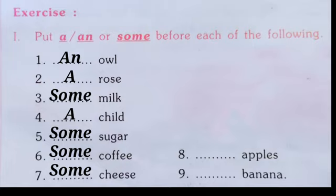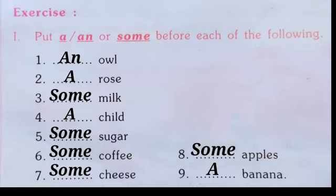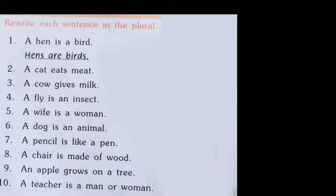Continuing the answers: some sugar, some coffee, some cheese. For the eighth one — 'dash apples' — though apples are countable, we use 'some' because apples here are plural, and 'an' signifies singular. Lastly, 'a banana', as it is a singular countable noun.